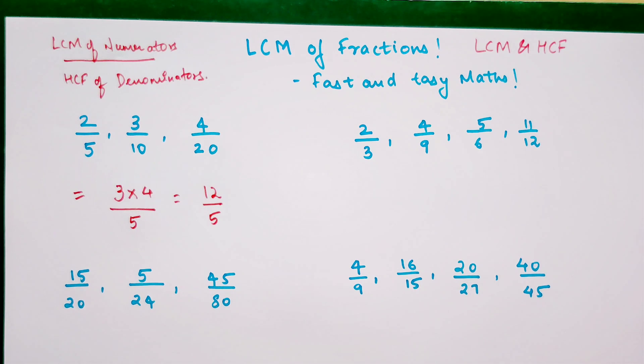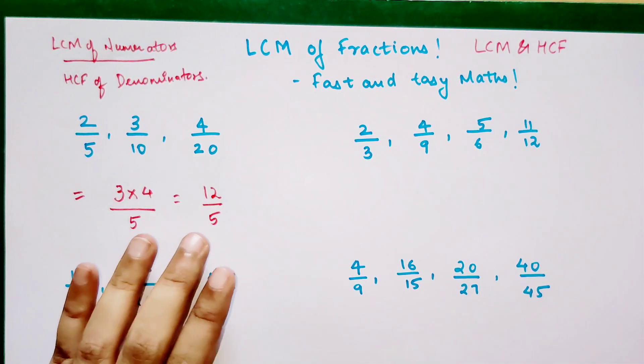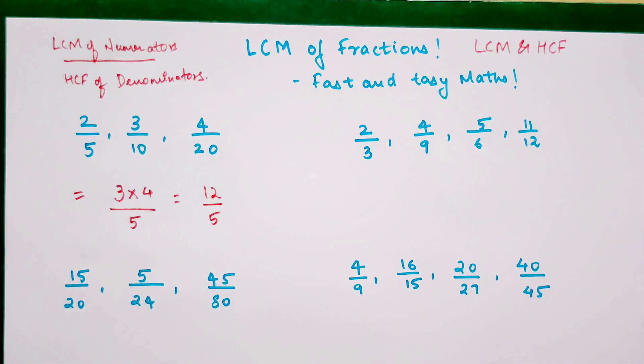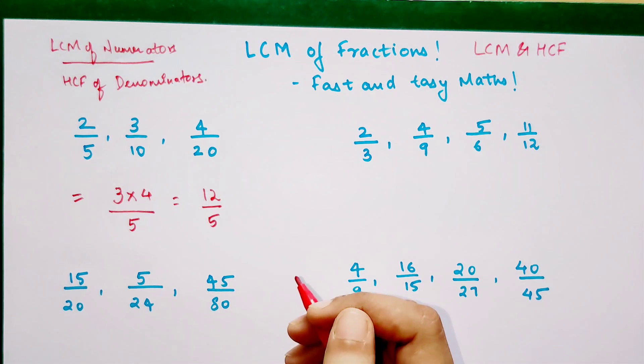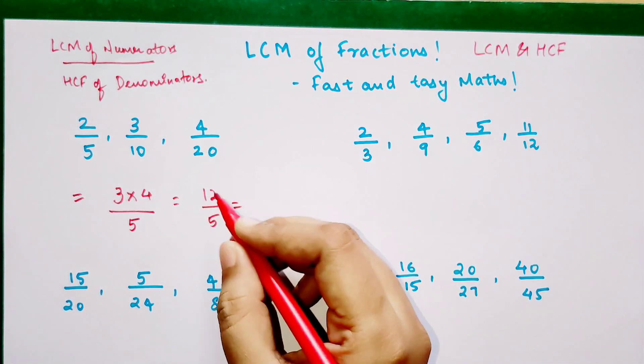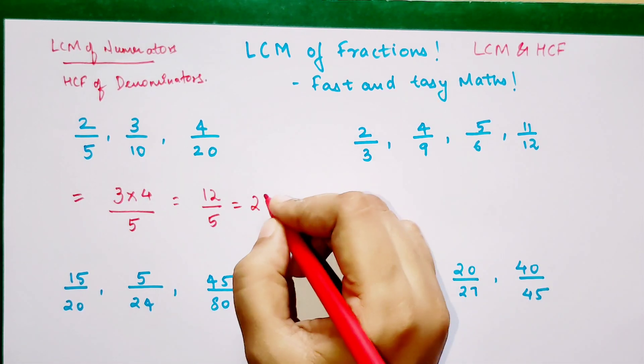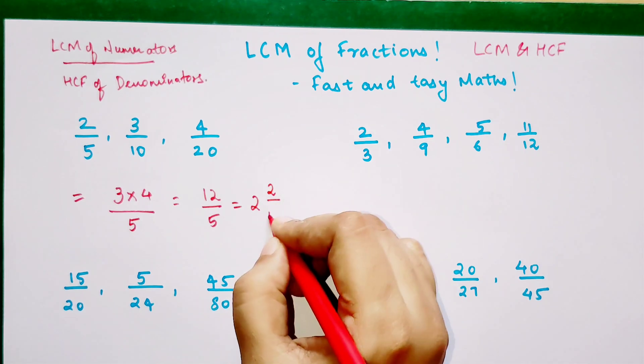We got the final answer as 12 upon 5. Now please understand, in many of your entrance exams they want you to type in the answer or write the answer and you do not get options. So in that case I would recommend that since this is an improper fraction, you have to convert it into proper form. So your answer will be 2 and 2 upon 5.